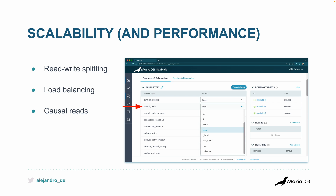There's something called causal reads. When you write data it goes to the primary, and it could take an instant to get replicated to the other node. So maybe you run an insert and then almost at the same time you read from the replica, but the replication process hasn't finished yet for that row, so you might get wrong results.